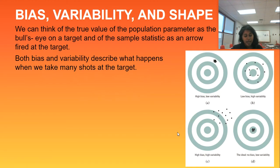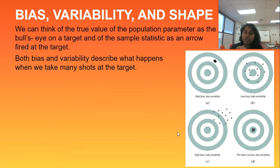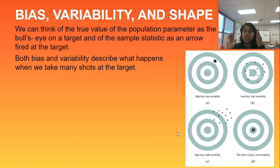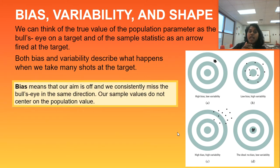Finally, we're going to talk about bias, variability, and shape. We can think of the true value of the population parameter as the bullseye on a target and the sample statistic as an arrow fired at the target. The bullseye itself is your population parameter and the arrow itself is your sample statistic. Remember, P for parameter for population, S for statistics for sample. Both bias and variability describe what happens when we take many shots at the target.